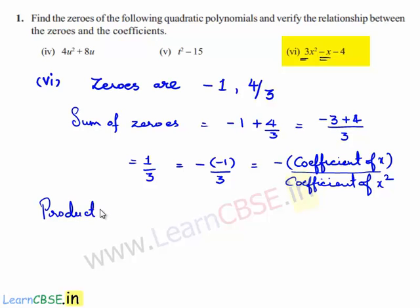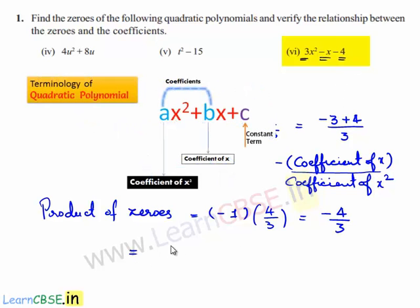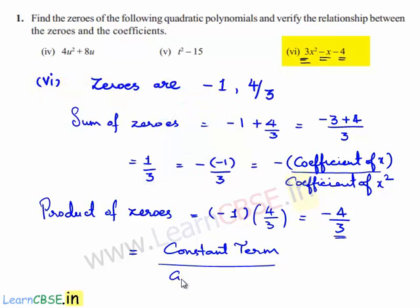The product of the zeros is equal to minus 1 multiplied by 4 by 3, which is minus 4 by 3. Here, minus 4 is the constant term and 3 is the coefficient of x squared. So the product of zeros is equal to constant term divided by coefficient of x squared.